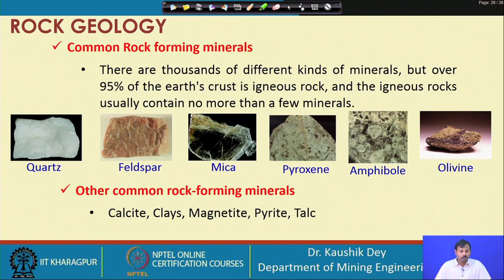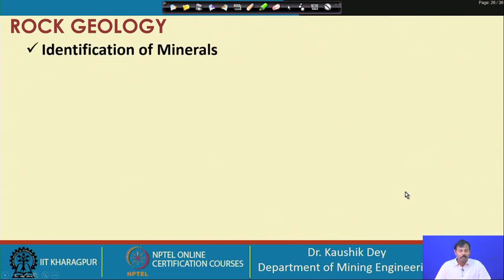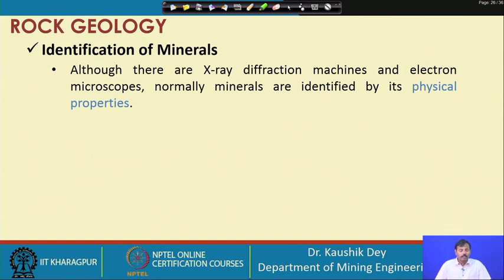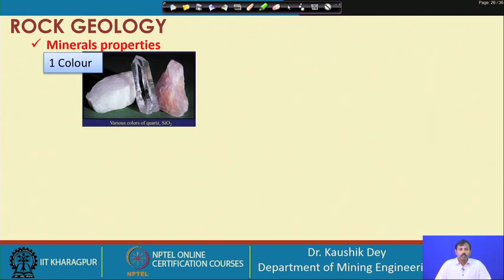Other common rock-forming minerals include calcite, clays, magnetite, pyrite, and talc, though the major ones are those listed above. Minerals are easily identifiable because of their definite physical and chemical properties. The physical instruments commonly used to identify minerals include X-ray diffraction, electronic microscope, and GM counter. Let us now look at the different mineral properties that can be used to identify a mineral.